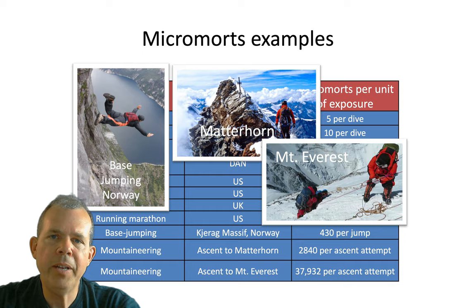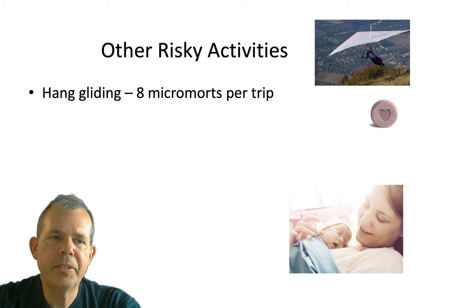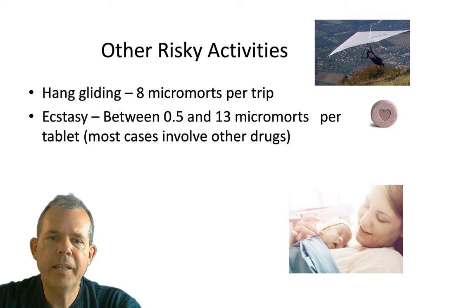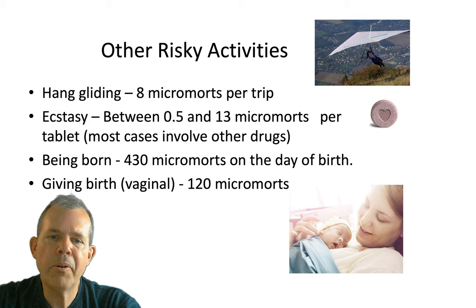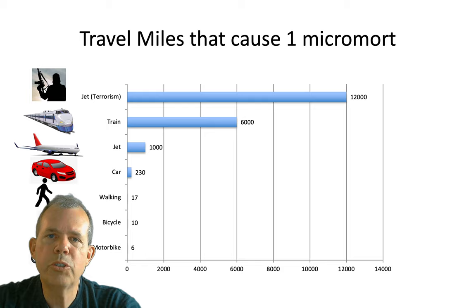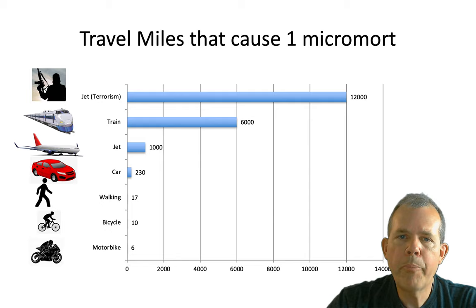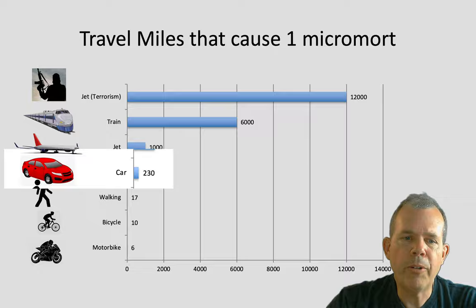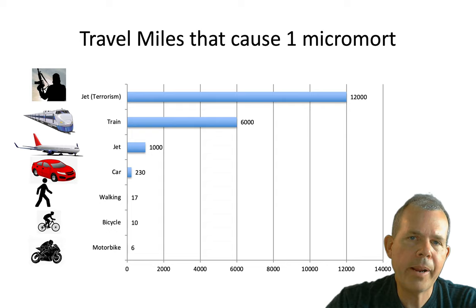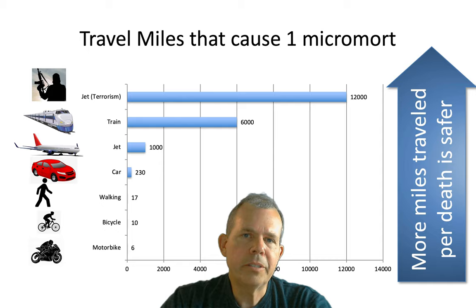Looking at other activities: hang gliding is 8 micromorts, taking ecstasy gets you up to 13. Being born is pretty risky at 430, and giving birth is also risky for the mother at 120. For travel, a miles-per-micromort measurement tells you how risky different transportation modes are relative to each other — the more miles per micromort, the safer the travel. A car sits in the middle: you can travel 230 miles to create 1 micromort.